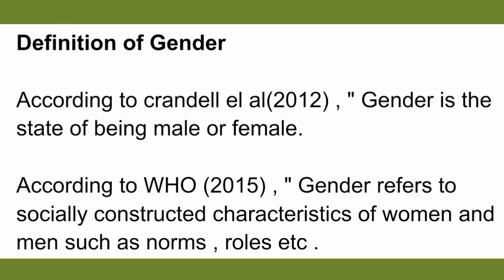According to the WHO, gender refers to the socially constructed characteristics of women and men, such as norms and rules. For example, society says that household work should be done only by women, and men are more suitable for physical and outdoor work. These types of rules and norms constructed by society are what we call gender — it is not biological, it is constructed by society.